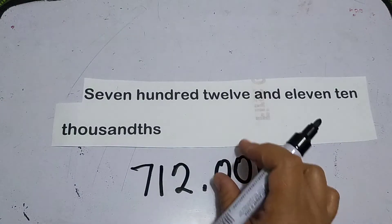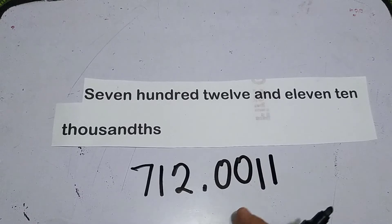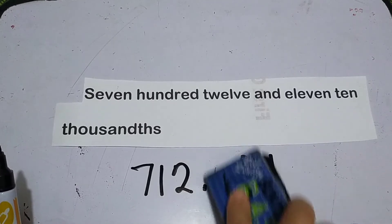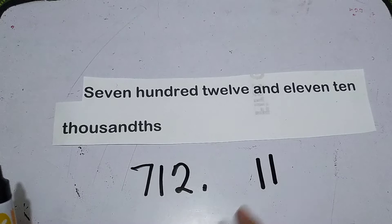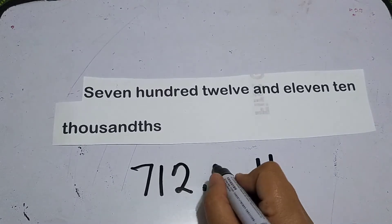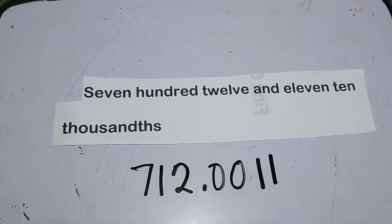If you remove the two zeros, the reading won't be 712 and 11 ten thousandths. If you remove this, it'll only be 712 and 11 thousandths. That's why you have to add zero here.